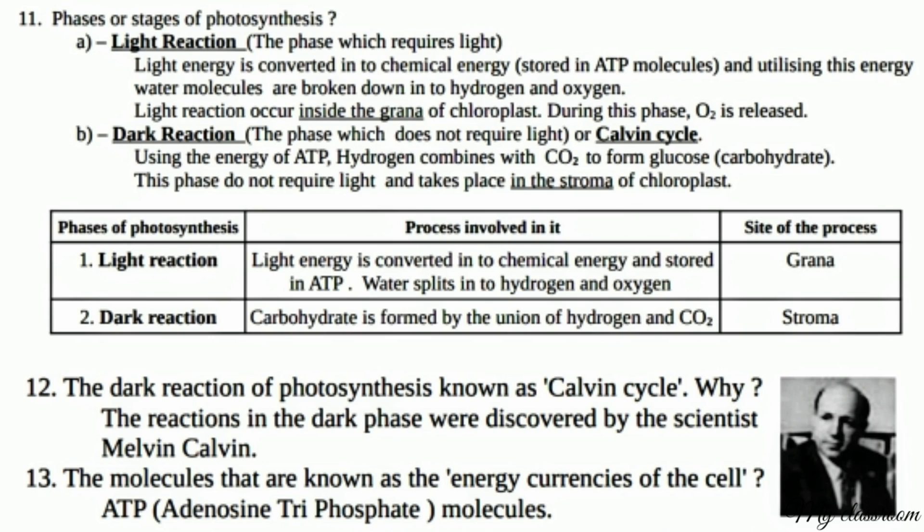B. Dark reaction: the phase which does not require light, also called the Calvin cycle. Using the energy of ATP, hydrogen combines with CO2 to form glucose, i.e., carbohydrate. This phase does not require light and takes place in the stroma of the chloroplast.